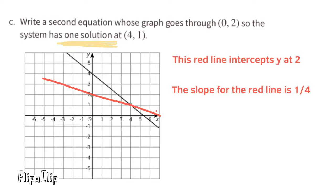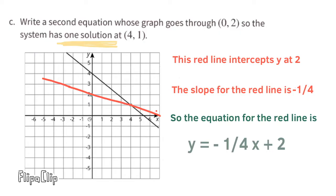Part C: Write a second equation whose graph goes through ordered pair (0, 2) so the system has one solution at ordered pair (4, 1). This red line intercepts y at 2. The slope for the red line is negative one-fourth. So the equation for the red line is y equals negative one-fourth x plus 2.